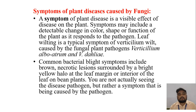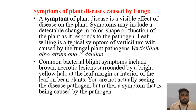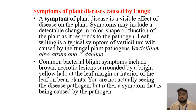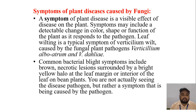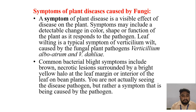Symptoms of plant disease caused by fungi: A symptom of plant disease is a visible effect of disease on the plant. Symptoms may include a detectable change in color, shape or function of the plant as it responds to the pathogen. Leaf wilting is a typical symptom of Verticillium wilt, caused by the fungal plant pathogens Verticillium albo-atrum and Verticillium dahliae. Common bacterial-applied symptoms include brown necrotic lesions surrounded by bright yellow at the leaf margin or interior of the leaf in bean plants.